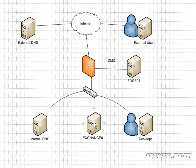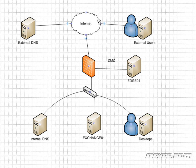The edge transport server is optional. The three roles you must have are the client access server, the mailbox role, and the hub transport role. We can actually have email sent directly to our hub transport server without an edge transport server.